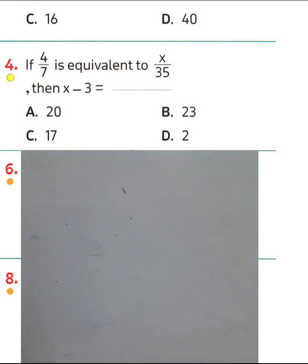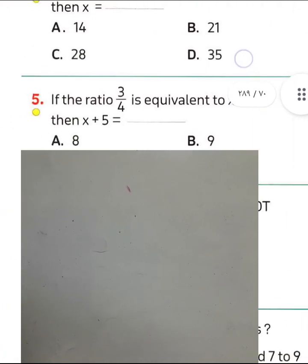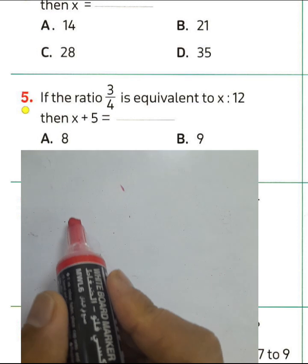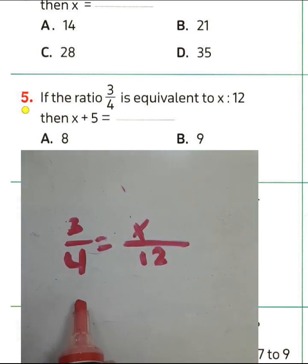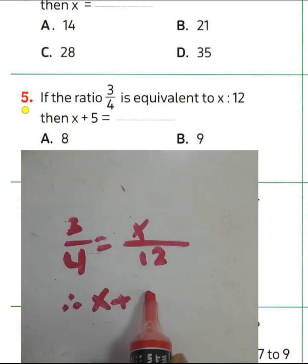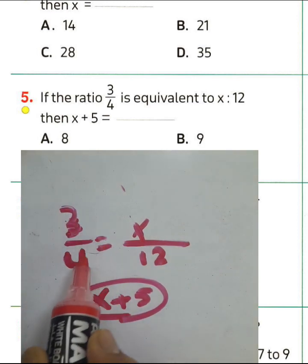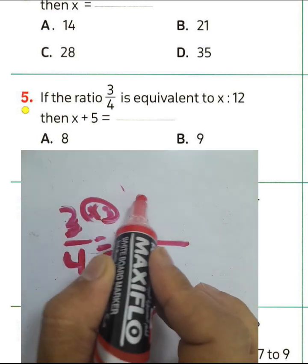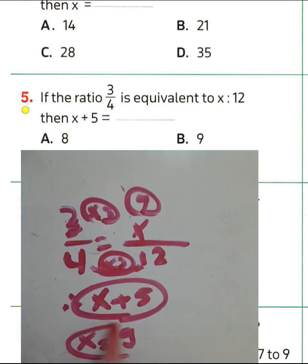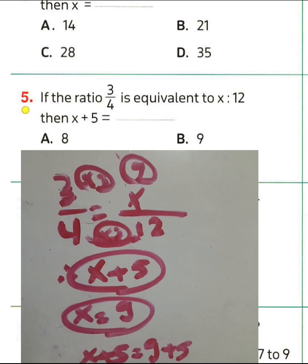Question number 5: if the ratio 3 over 4 is equivalent to x over 12, we can find x plus 5. We know 4 multiplied by 3 equals 12, then 3 times 3 equals 9, so the value of x equals 9. Then x plus 5 equals 9 plus 5, which equals 14.